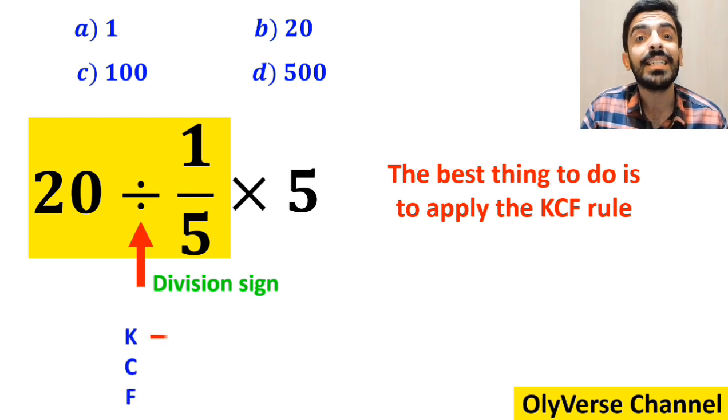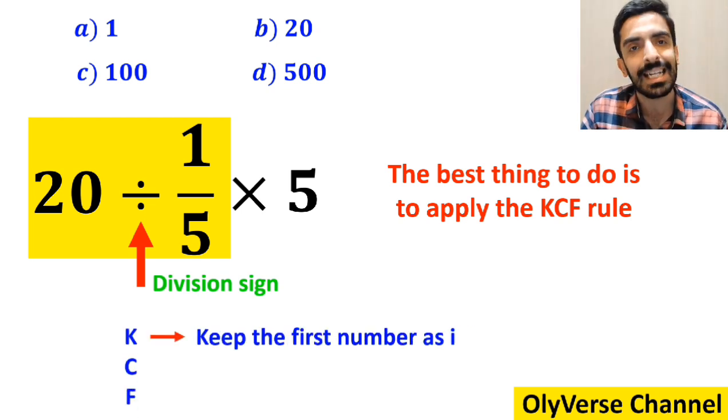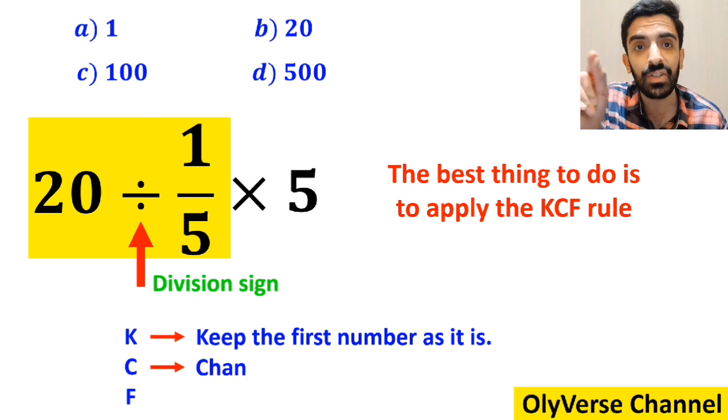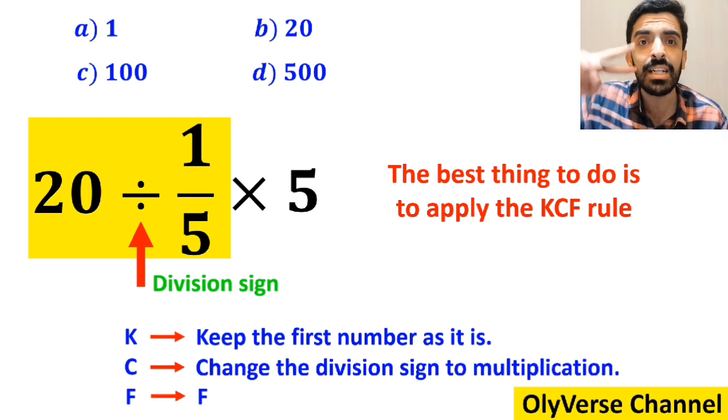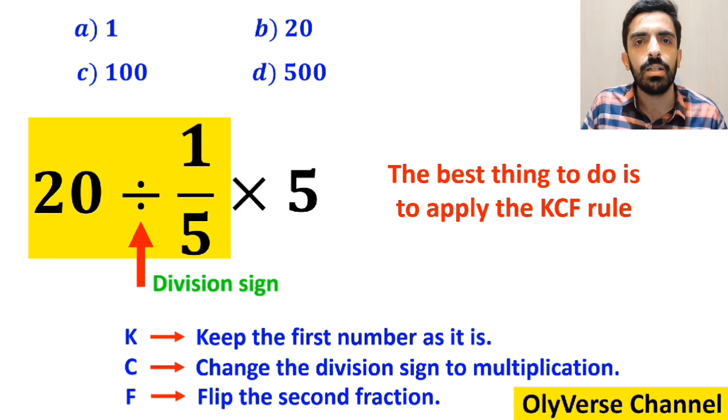In this rule, K stands for keep the first number as it is. C stands for change the division sign to multiplication. And F stands for flip the second fraction.